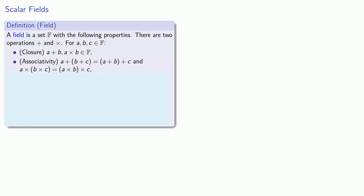Next, both of our operations have to be commutative. a plus b has to be the same as b plus a, and likewise, a times b must be the same as b times a.